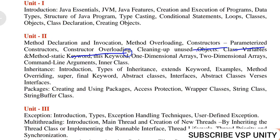For short questions, they might ask about methods. There are two different types: static keyword and this keyword. These two will be asked separately, not both at a time. Either they might ask about static keyword or this keyword — what is the purpose of using static keyword, and define this keyword with an example. You have to write what is the static keyword and this keyword, then a small example for each.